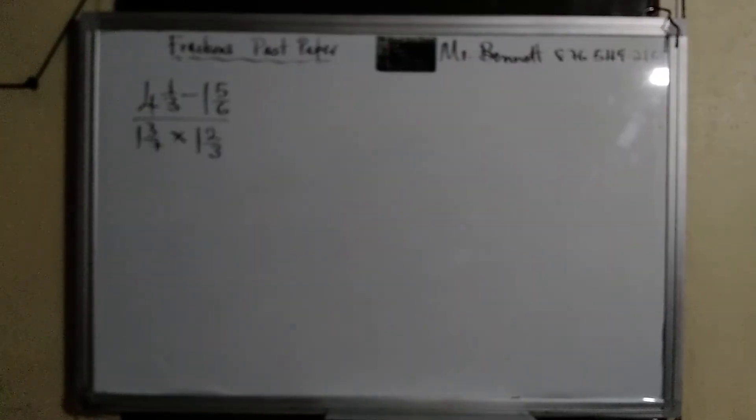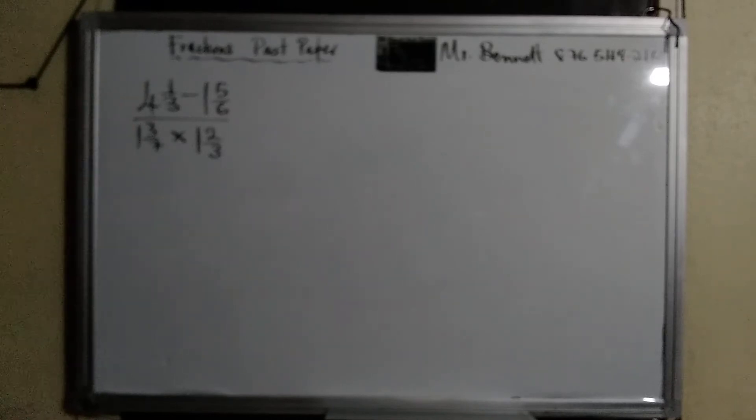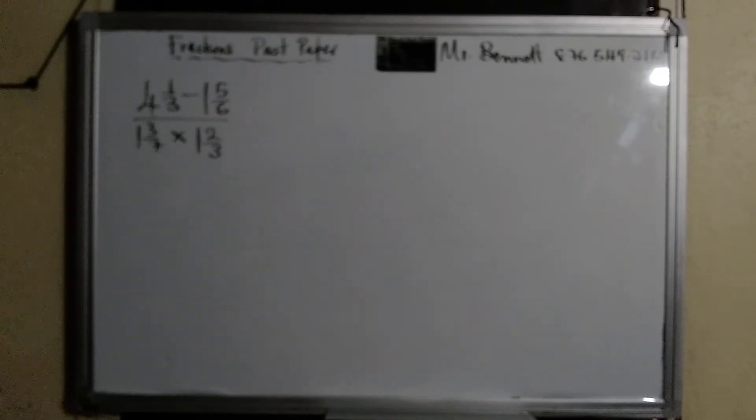Alright, so let us continue. So this one is a little bit different. It says four and one-third minus one and five-sixths, divided by one and three-sevenths times one and two-thirds. So all we have to do is to do the top again, do this, and then we divide. So you see how many operations, basically three operations is gonna happen.